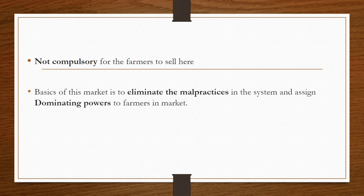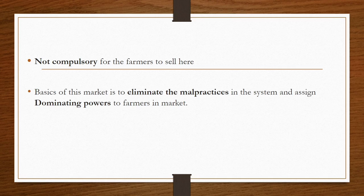This market is mainly established by the government to eliminate malpractices in the system and to assign dominating powers to the farmers in the market. So the producers or farmers who bring their produce should be in a dominating position to fix or bargain for prices. There should not be any malpractices in this market.